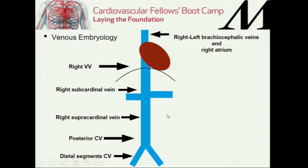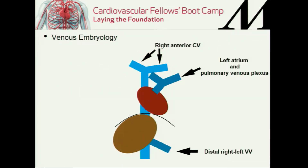The superior vena cava is going to be formed by the brachiocephalic veins and the right atrium, which fuse together. This proximal part of the inferior vena cava is the right vital vein. Then a series of cardinal and subcardinal veins continue all the way distal, to the most distal segment of the cardinal veins, which are going to form the iliac system. Once you see the previous picture, you can have a general concept of where the veins are coming from.